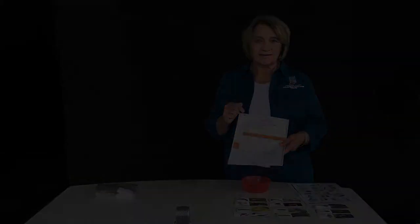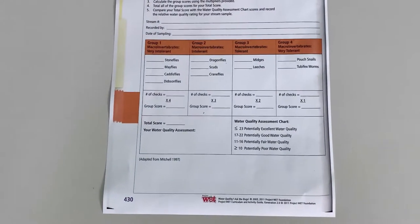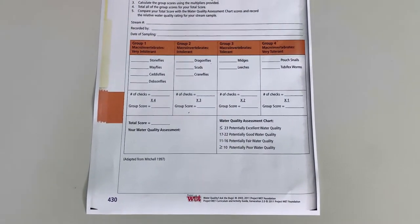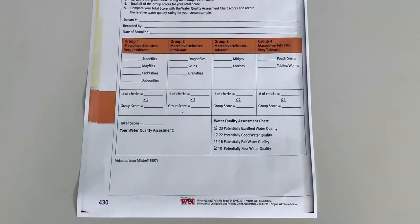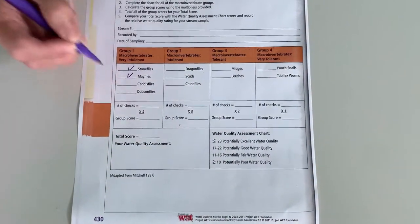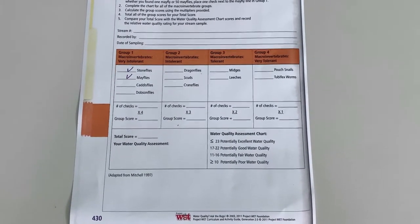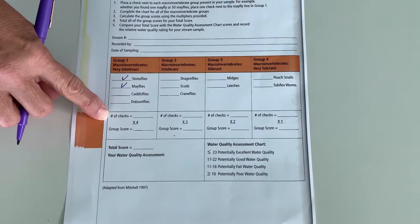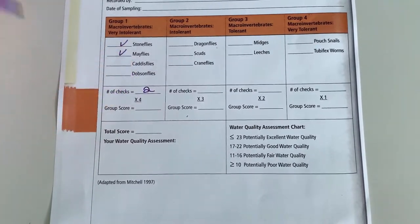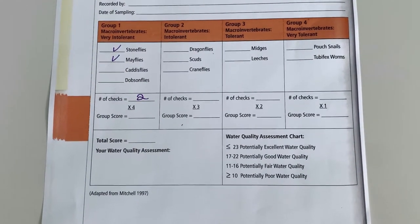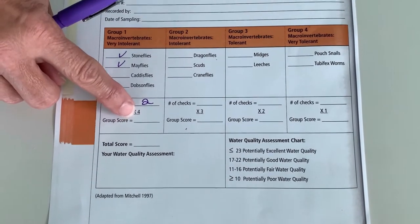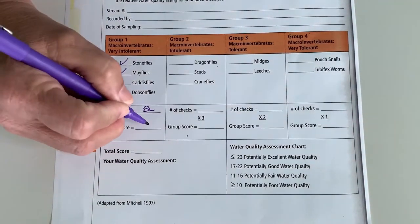So this is an example of the data sheet that you'll be using. So let's look and do an example of what your sample might have looked like. So we'll look at group 1 first. Let's say you pulled out some stoneflies and some mayflies. So that's two different things you found in group 1. So then we go down here, number of checks, 1, 2. So we'll put 2 there. Because they're group 1s, they get to score more points than any of the other groups. So they have a weighting factor here of 4. 4 times 2 is 8. So we'll put the 8 right here.